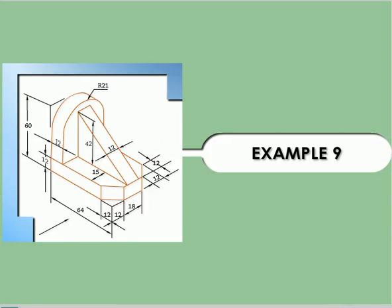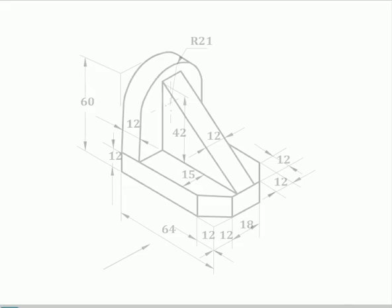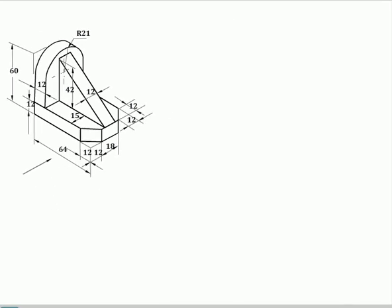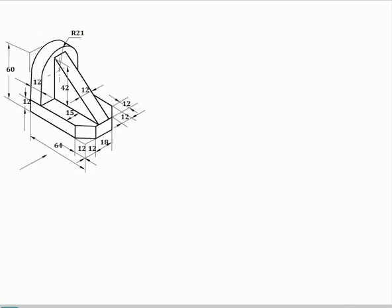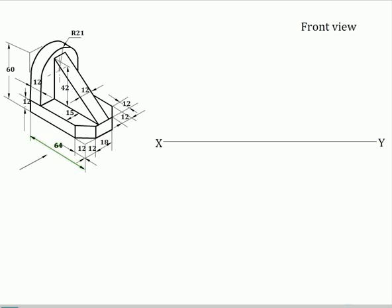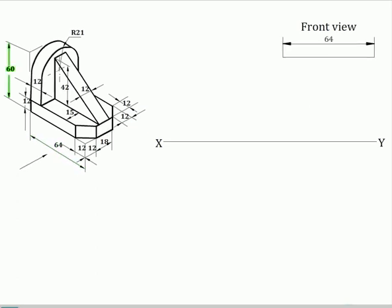Example problem. In this problem we have to draw the front view, top view and right side view of the object. First, conveniently draw the front view. For the diamond front, the web portion will be seen as a triangle.